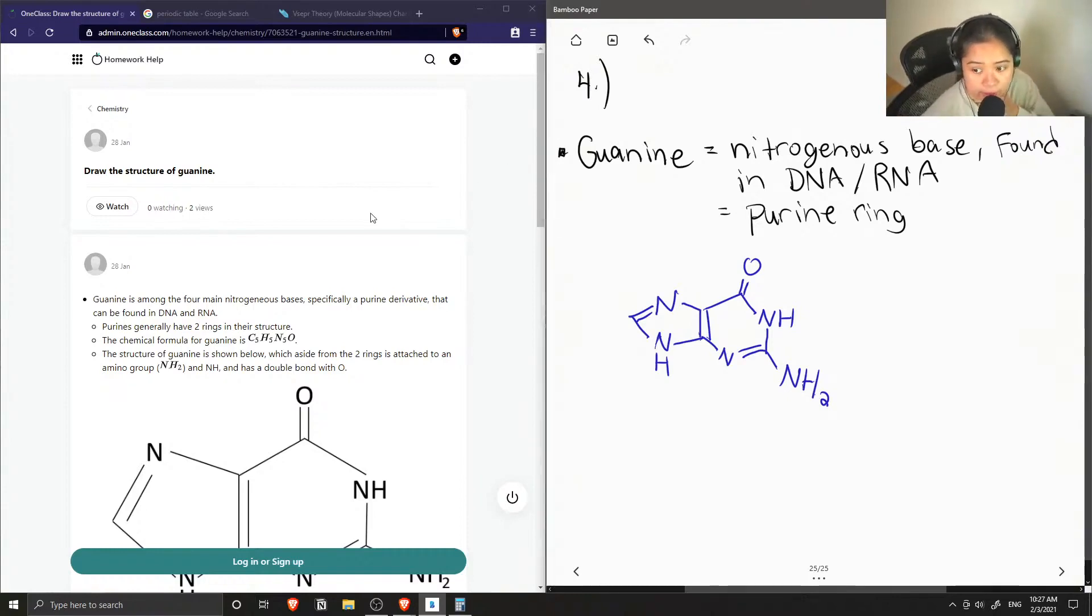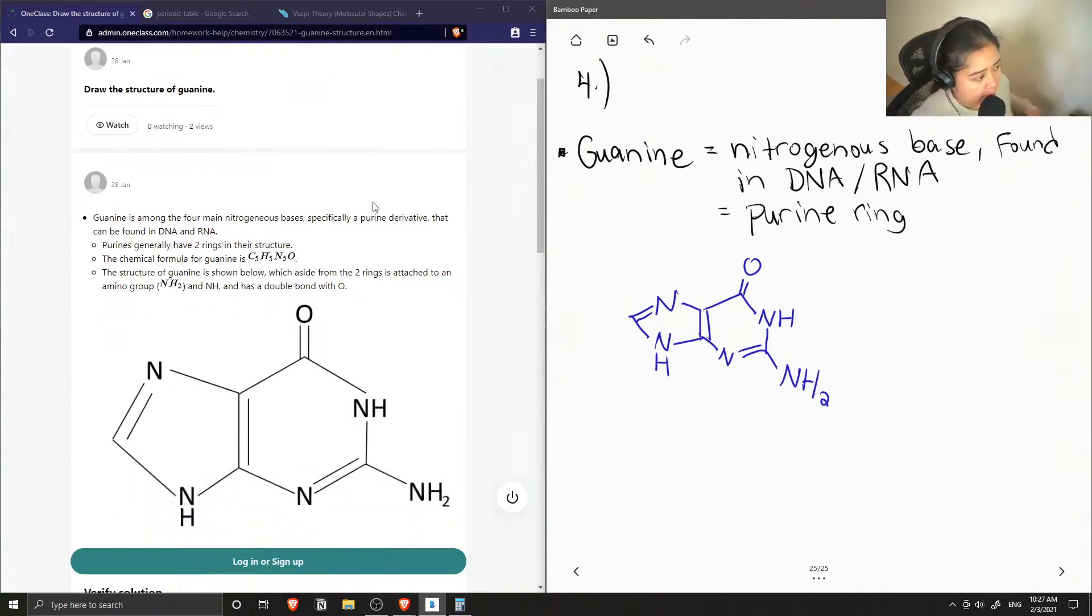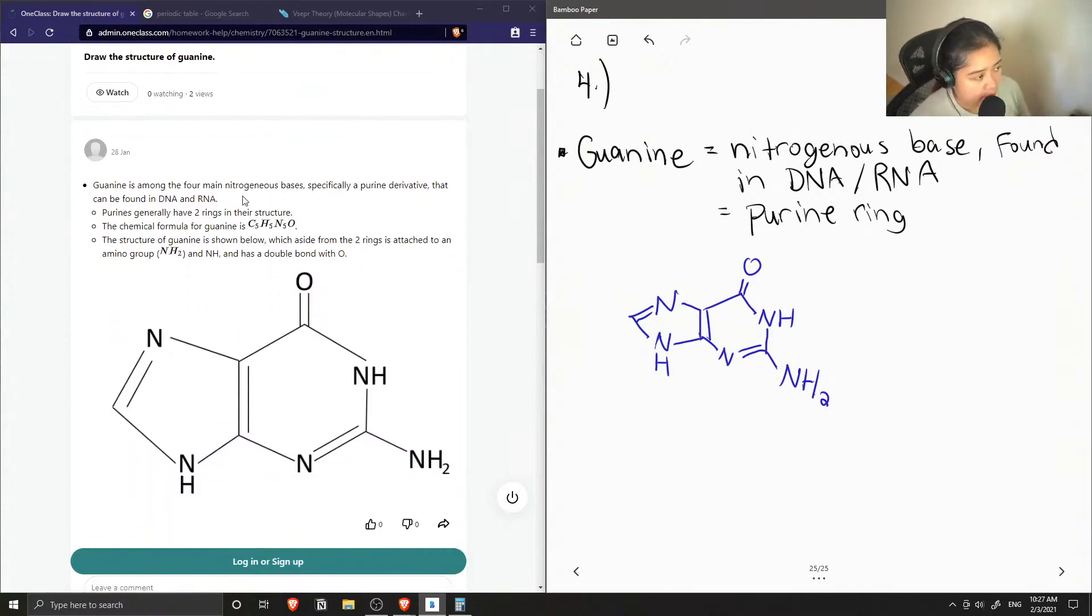And if we look at the tutor's answers, they said that guanine is among the four main nitrogenous bases, specifically a purine derivative that can be found in DNA and RNA. Purines generally have two rings in their structure, and the chemical formula for guanine is C5H5N5O.